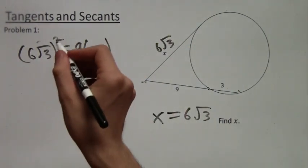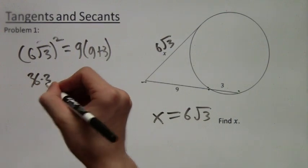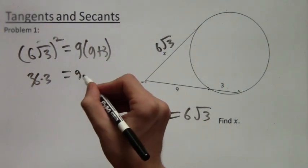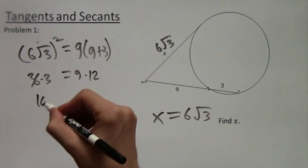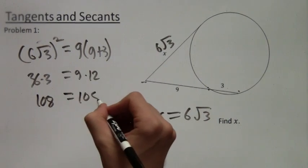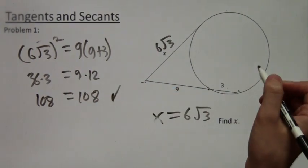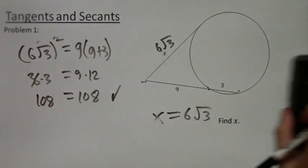So we square this, that's 36 times 3, equals 9 times 12, and we get 108 equals 108, which is true. So x equals 6 root 3 is correct. So we're ready for the next problem.